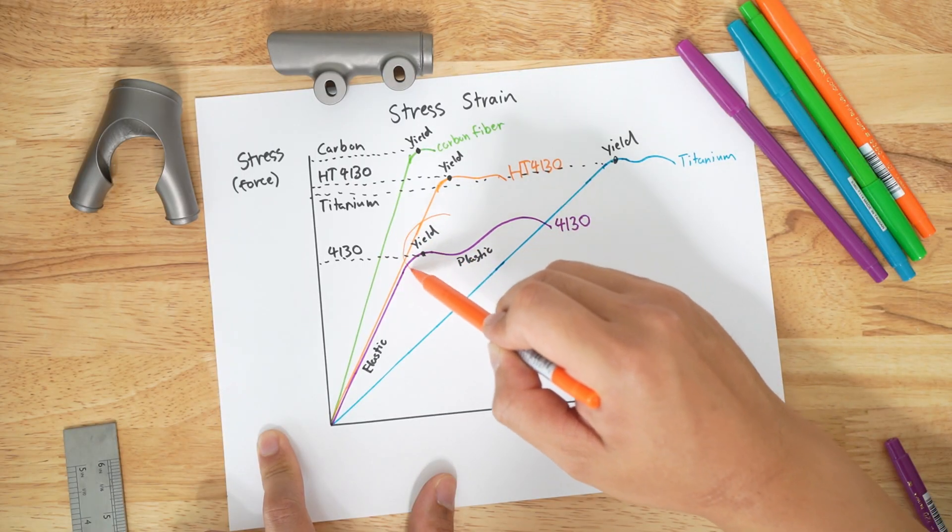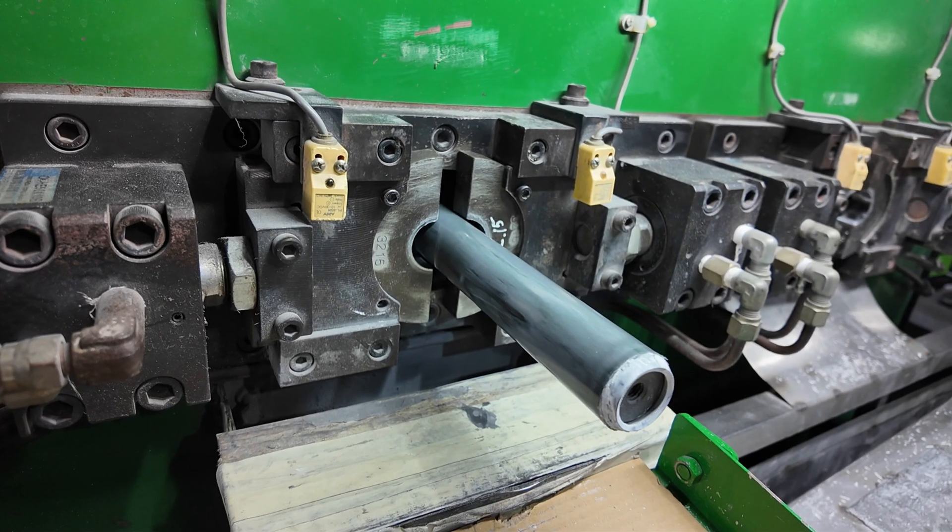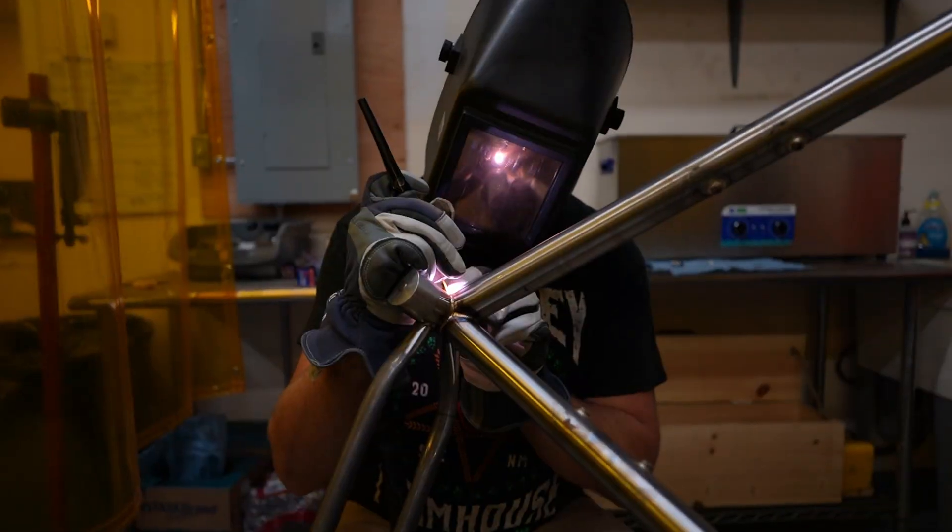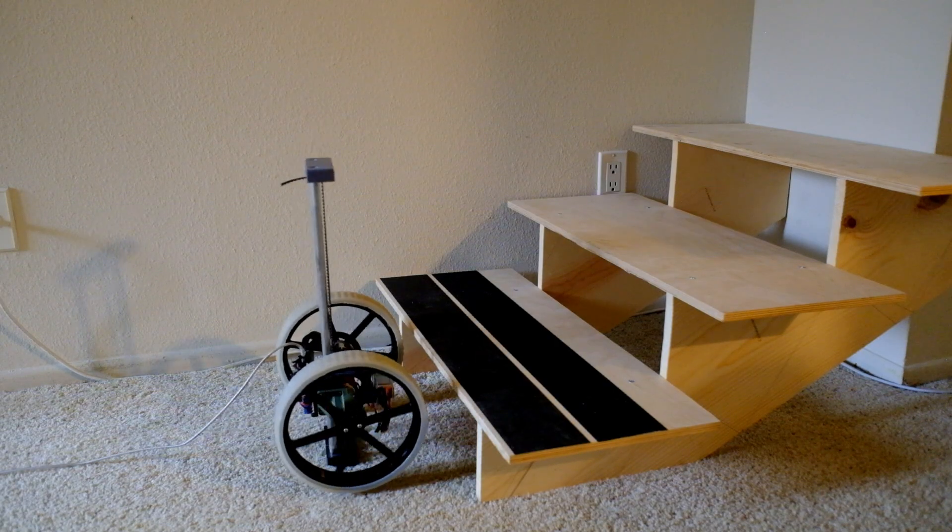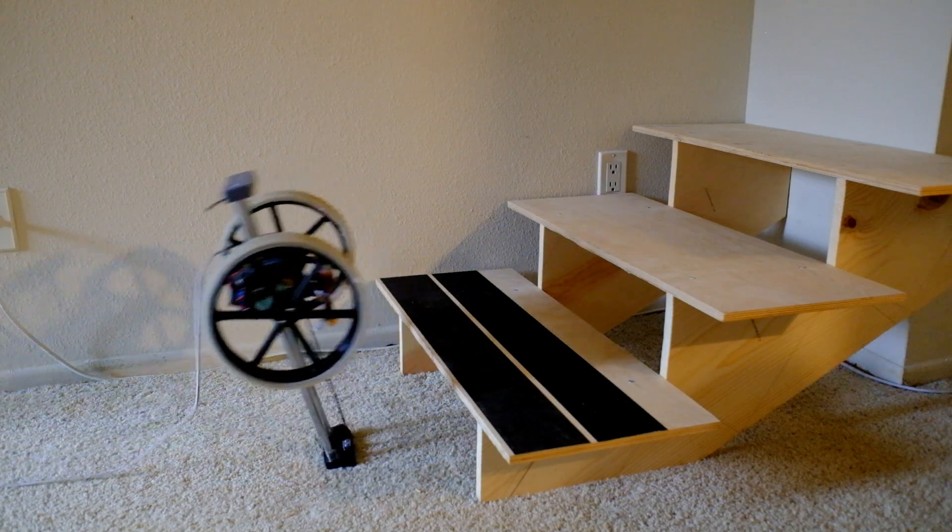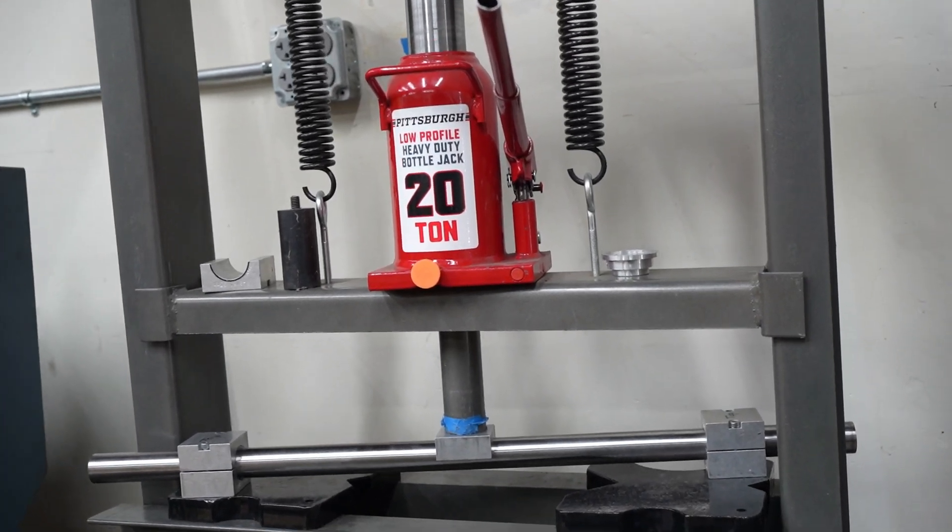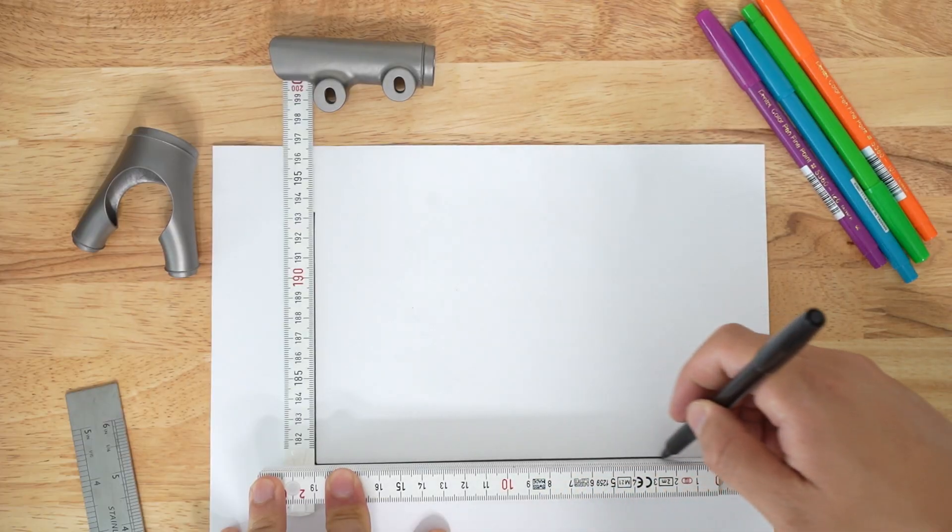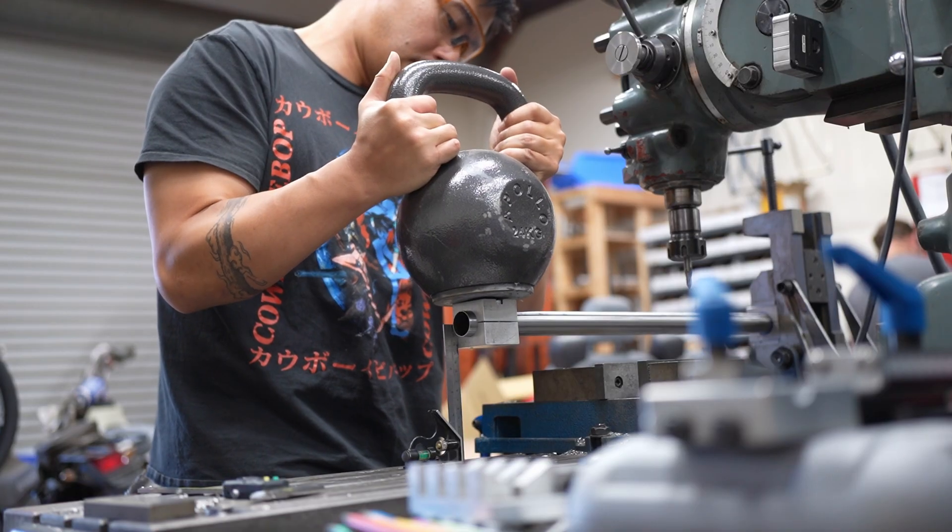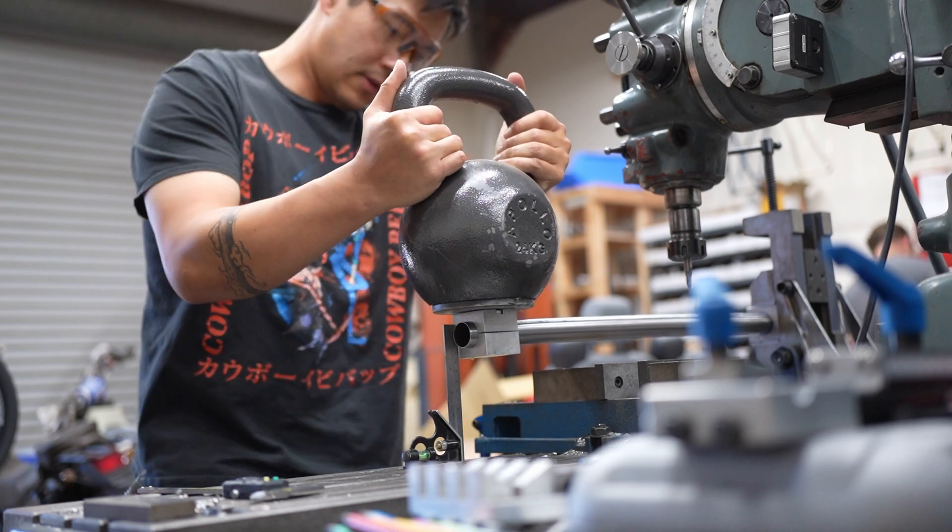In order to understand, we must dive deep into steel's mechanical properties and investigate how the tubes are made. As a frame builder and mechanical engineer, let me break it down for you. Let's educate ourselves on material properties. When you are engineering a bike frame, you are trying to balance three things: stiffness, strength, and weight.